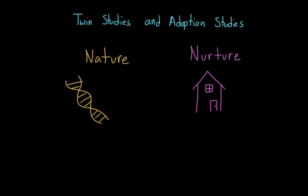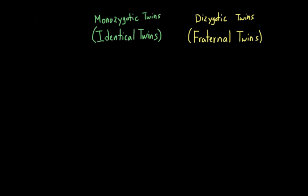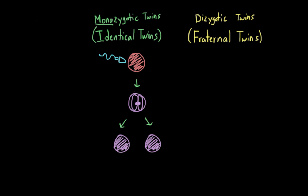There are two types of twins: monozygotic twins, also known as identical twins, and dizygotic, or fraternal twins. Monozygotic twins develop from a single fertilized egg — 'mono' meaning one. One egg and one sperm come together, the sperm fertilizes the egg, and then the egg splits into two. Because the egg splits after fertilization, monozygotic twins are genetically identical — they share 100% of their genes and have the same genetic code in every cell.